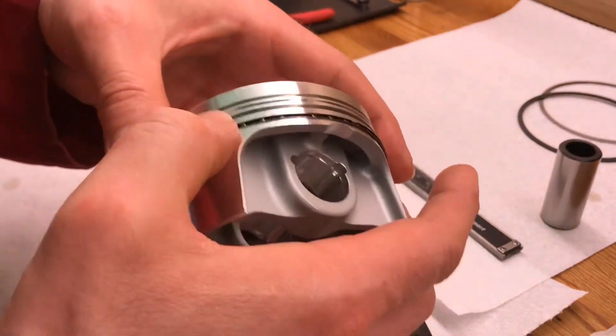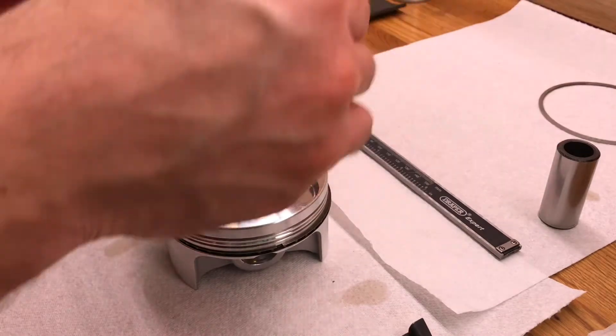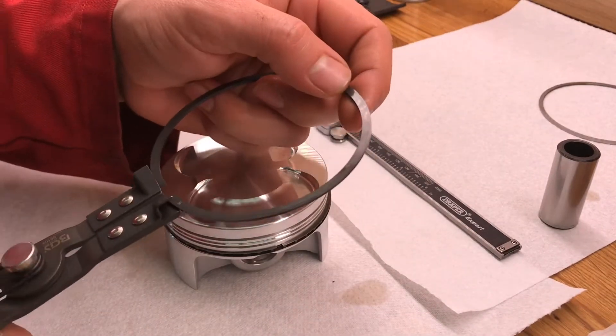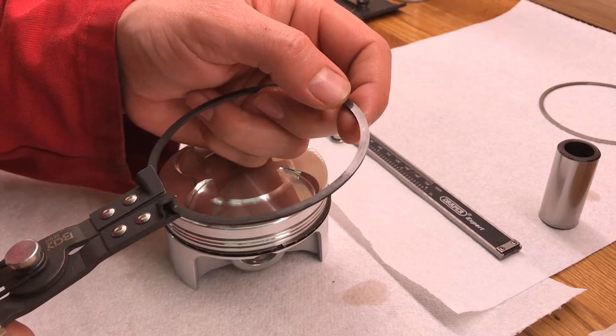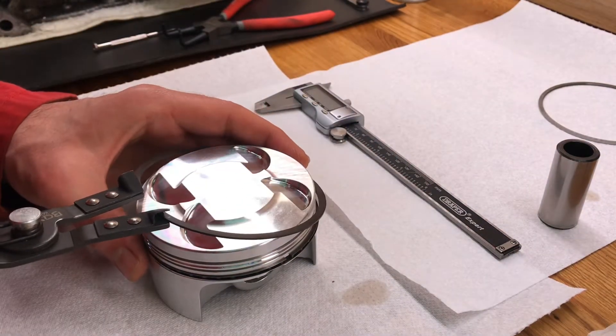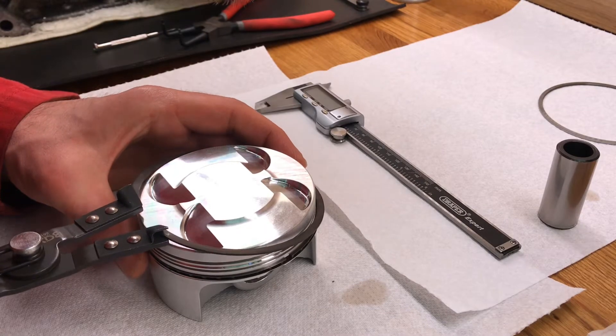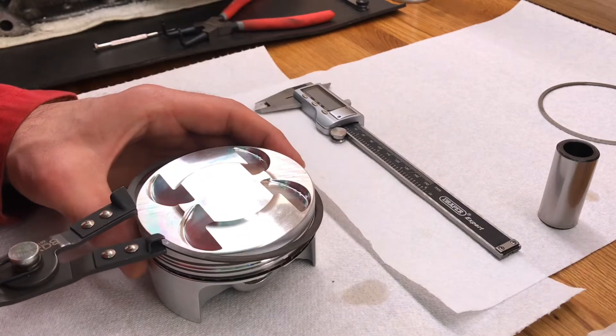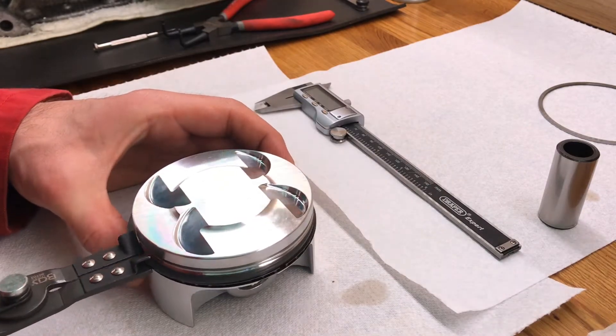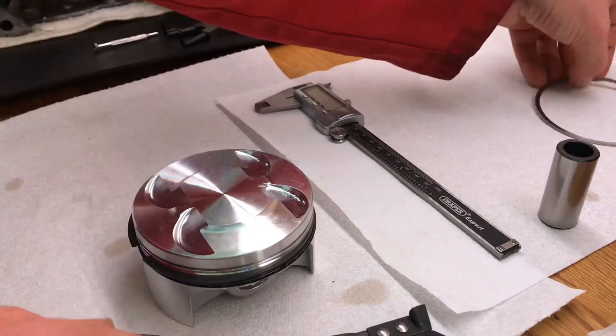So second ring. This time, use my ring expander. I just need to get this clear enough to get the back end in and pull this wide. There you go. So that one, and then the top ring.